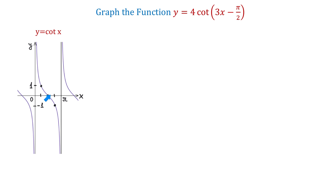Here we have the x-axis and the y-axis, and one of the vertical asymptotes is at 0 and another one at pi. Between these two consecutive asymptotes, we have one part of this cotangent function, and more parts to the left and to the right. If we look at the function between these two consecutive asymptotes, then we can say that this function completes one period as x changes between 0 and pi.